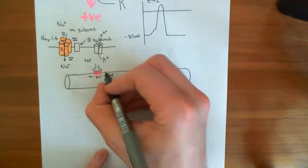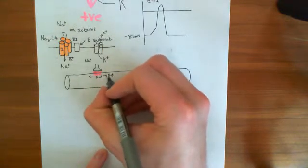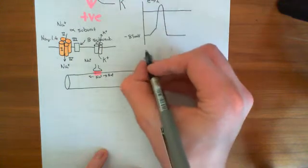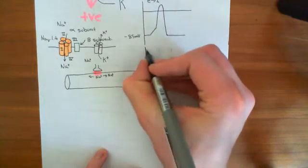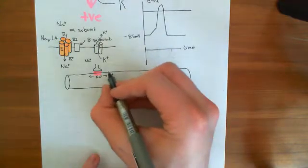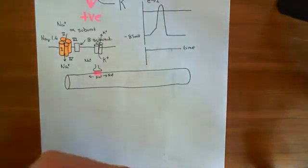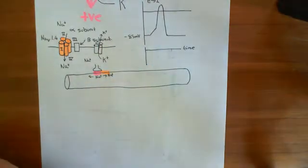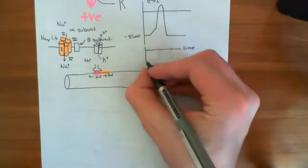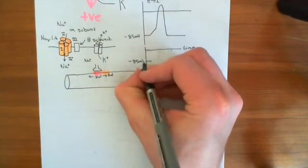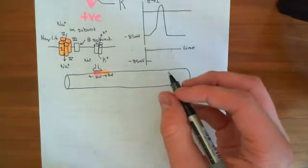When sodium goes up in the neighbouring portions of membrane within the intracellular compartment, it's going to trigger this initial depolarisation. If I draw another graph of voltage versus time, initially — if we're now looking at this neighbouring piece of membrane — it's at negative 85 millivolts across that membrane. So the electrical potential difference across the membrane is negative 85 millivolts.